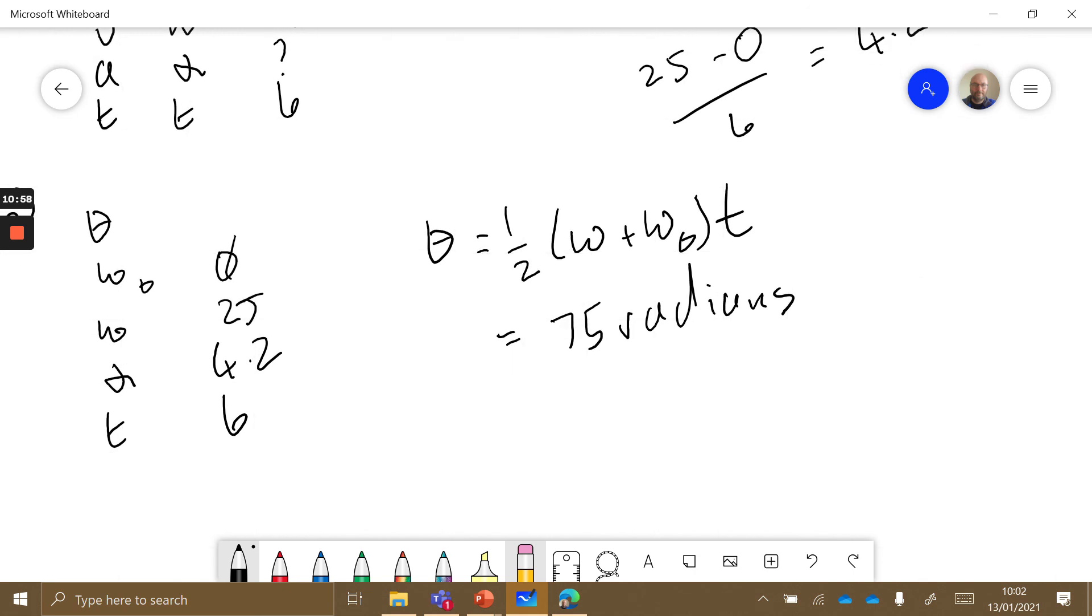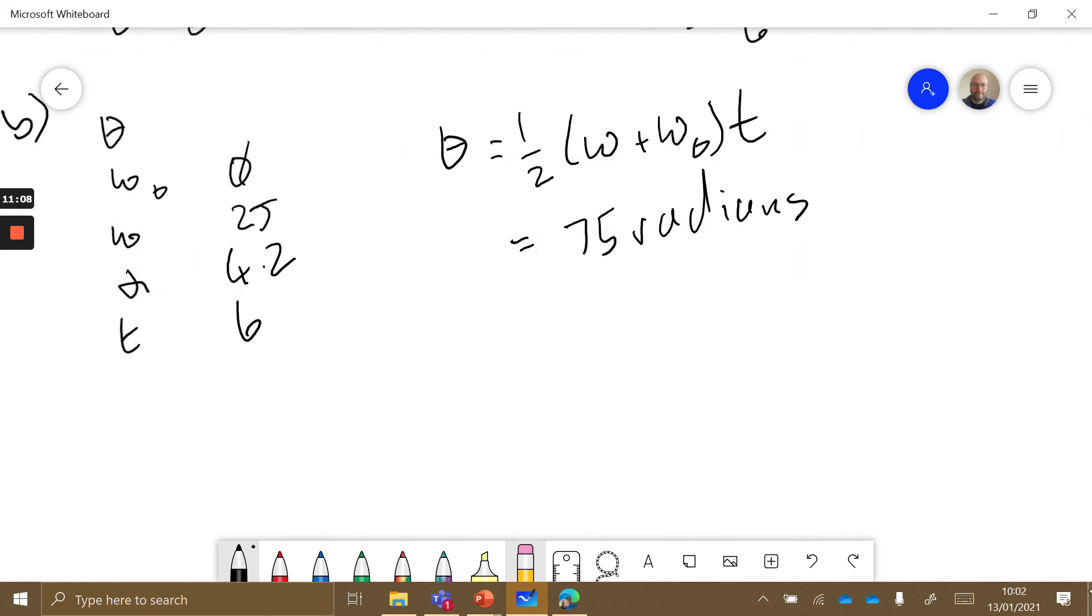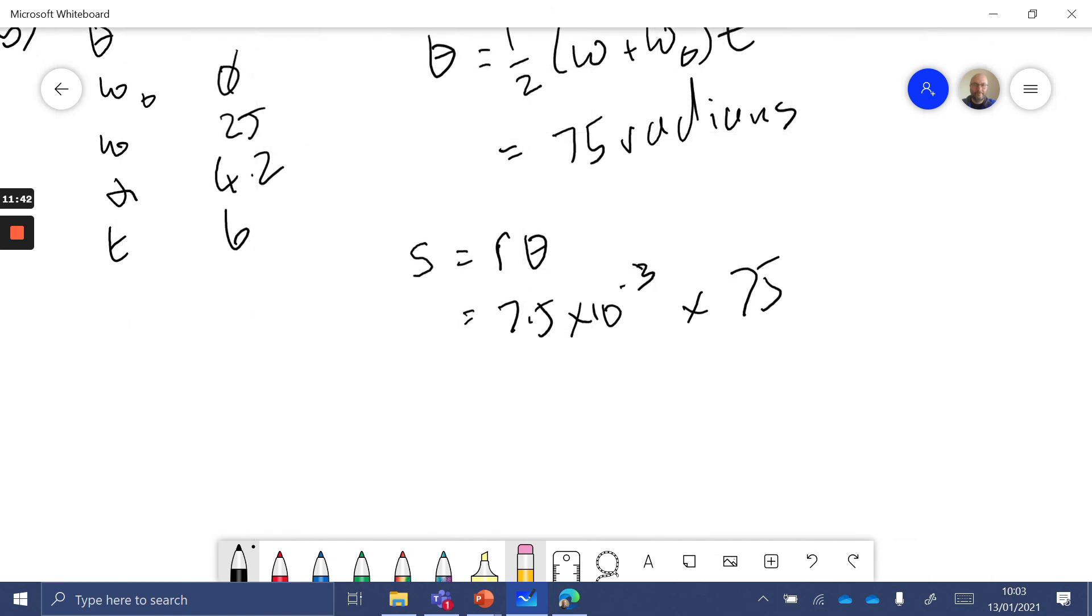However, we're looking for the length of string. That is the number of radians through which the pulley has rotated, so at this point I need to do s, the linear displacement of a point on the pulley wheel. If I consider a point on the surface of the pulley wheel, then the total linear distance that point travels is equal to the amount of string that has been unwound. So s equals r theta, which is equal to 7.5 times 10 to the minus 3 times 75 radians, because it's moved through 75 radians. That is equal to 0.6 meters.